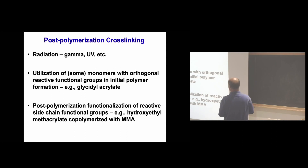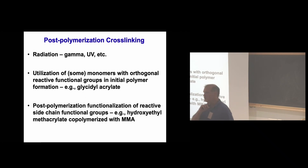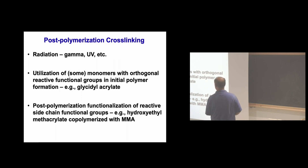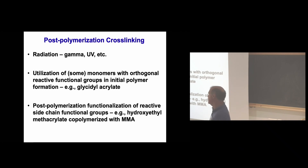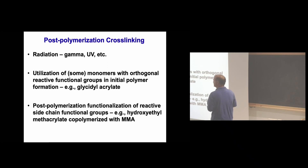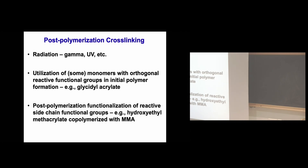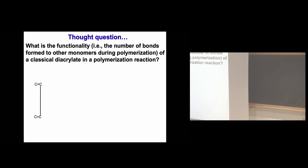Another approach is a two-step method — take hydroxyethyl methacrylate, co-polymerize it with methyl methacrylate, and use the hydroxyl side chains for further functionalization, even converting them back to methacrylates. Three different ways, all roughly equivalent: form the linear backbone, attach functional groups to it, then crosslink. Post-polymerization crosslinking via radiation is the least common, least controlled, and the one we'll implement least for dynamic covalent chemistry.